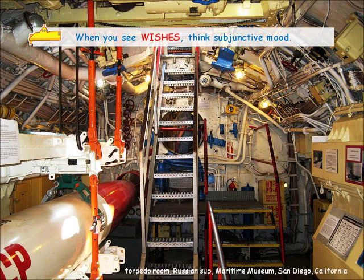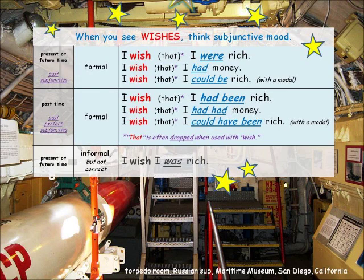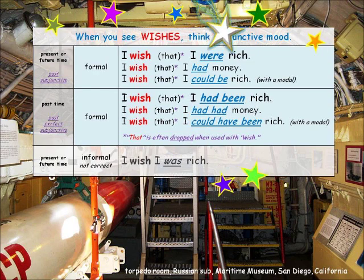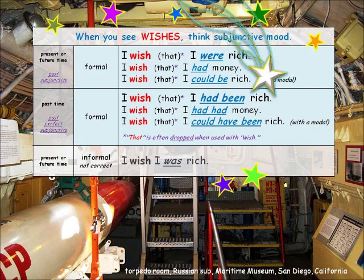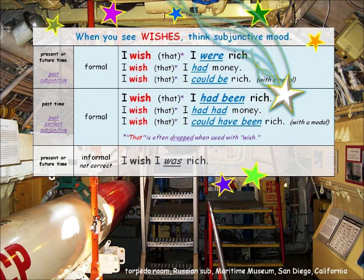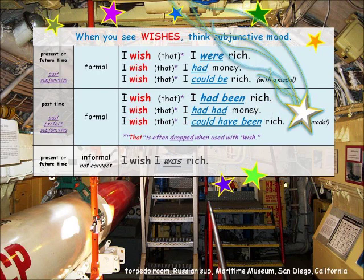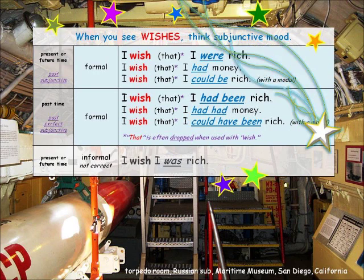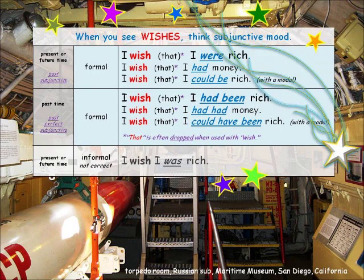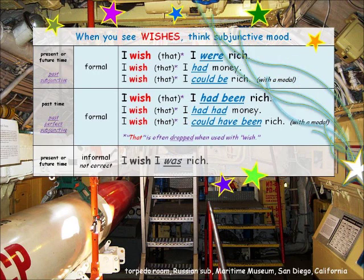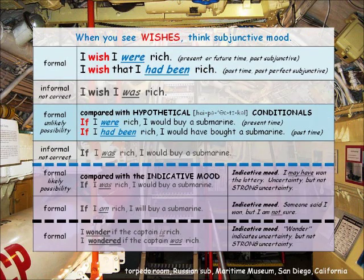When you see wishes, think subjunctive mood. For present or future time, use the past subjunctive: 'I wish I were rich,' 'I wish I had money,' 'I wish I could be rich.' For past time, use the past perfect subjunctive: 'I wish I had been rich,' 'I wish I had had money,' 'I wish I could have been rich.' Here are some examples of hypothetical conditionals alongside wish examples for comparison.